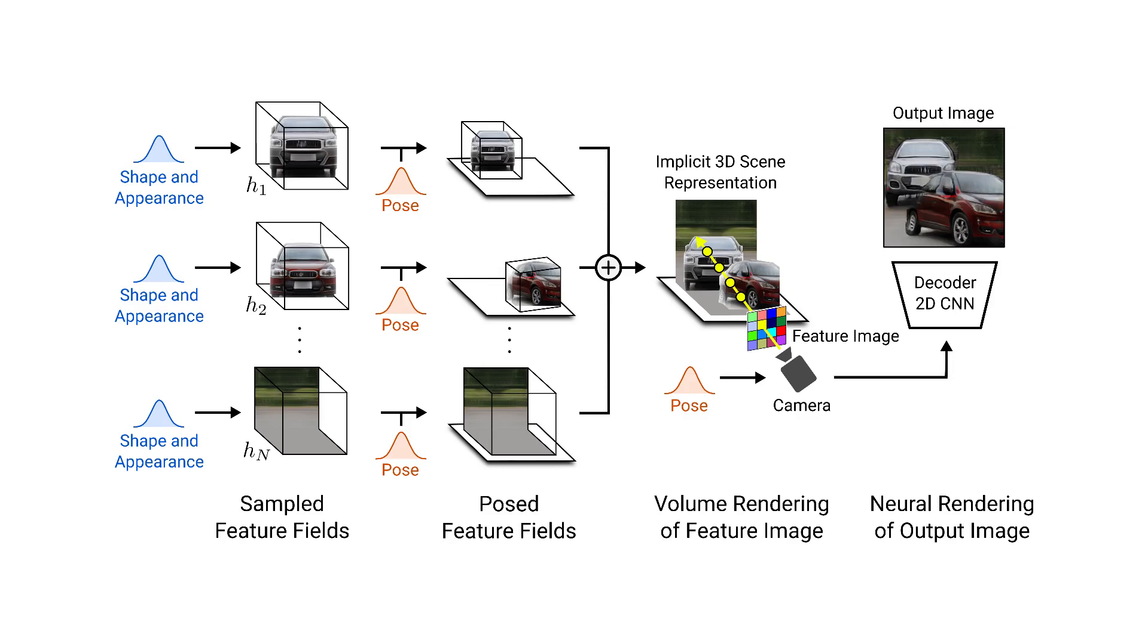Crucial for achieving control over image synthesis is that while during training we randomly sample the object as well as the camera poses, at test time we have explicit control over them. And of course, the same applies to the individual shape and appearance codes.